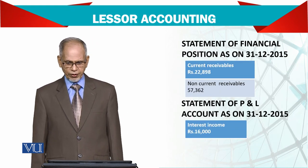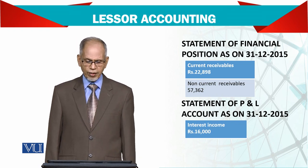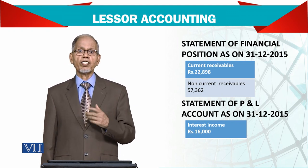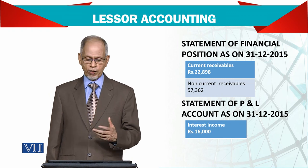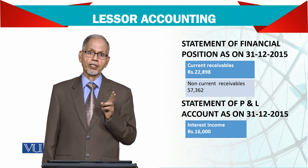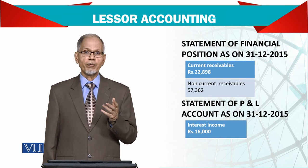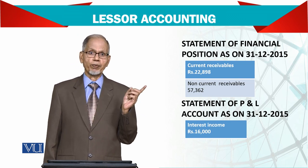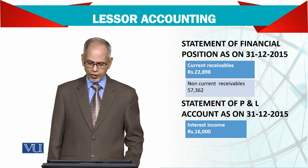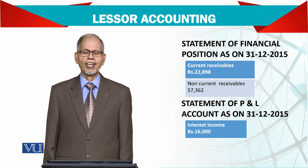In the financial statements, current receivables are those you are going to receive next year, and the remaining to be received after that are long term. These figures appearing in the lessor's books mirror those in the lessee's books — if I'm claiming you owe me 10 rupees, he must also show he owes me 10 rupees. In the statement of profit and loss, the lessor will simply report interest income of 16,000 and nothing else.